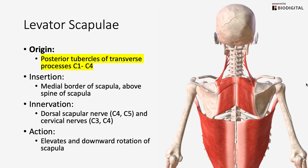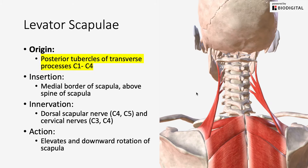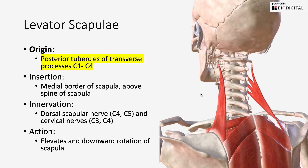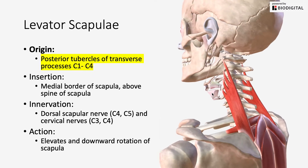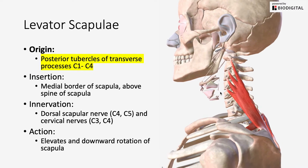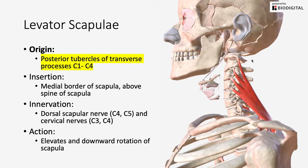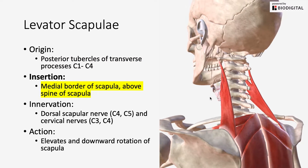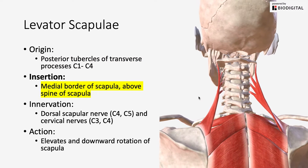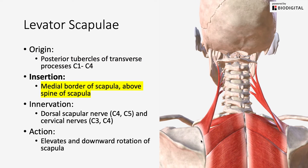The next muscle we're going to go over is your levator scapulae. The origin of your levator scapulae is on the posterior tubercles of the transverse processes of C1 to C4, as you can see here, and then it's going to insert on the medial border above the spine of the scapula.